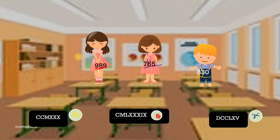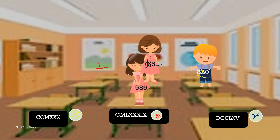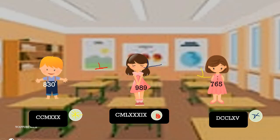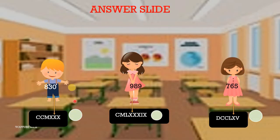Let's see the answers. Will they go to the benches we marked? Yes, they have gone to the benches we marked. Our answers are correct! He is sitting in the yellow one, she is sitting in the red, and she is sitting in the blue one. We have done all the activities correctly!